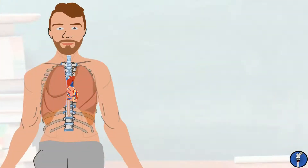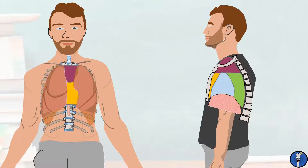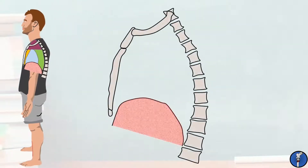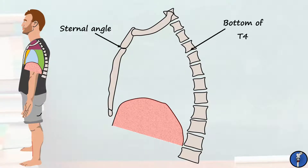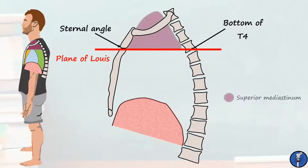The mediastinum is the central part of the thorax, and the part that contains the heart, as well as many other important structures. It's bounded on either side by the pleural membranes of the lungs, inferiorly by the diaphragm, and superiorly by the thoracic inlet. To make it easier to talk about, anatomists split the mediastinum into superior and inferior sections. The line dividing these two sections is a plane formed between the angle of the sternum, where the manubrium joins the body, and the bottom of the T4 vertebra. This line is commonly referred to as the plane of Louis. Anything above this is considered superior mediastinum, and anything below is inferior mediastinum.